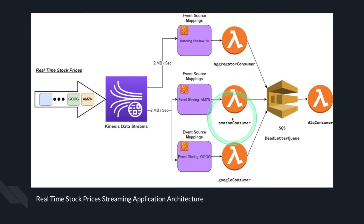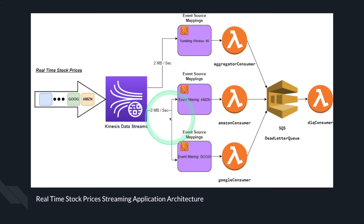The second is the Amazon consumer. This consumer is defined as a shared throughput consumer, which means it shares the 2 MB throughput with all the other consumers in the stream. The responsibility of this consumer is to get real-time Amazon stock prices and decide if to buy or sell. The ability to filter events only with the AMZN ticker symbol is done by using a filter criteria, which filters events before the invocation of the Lambda function.